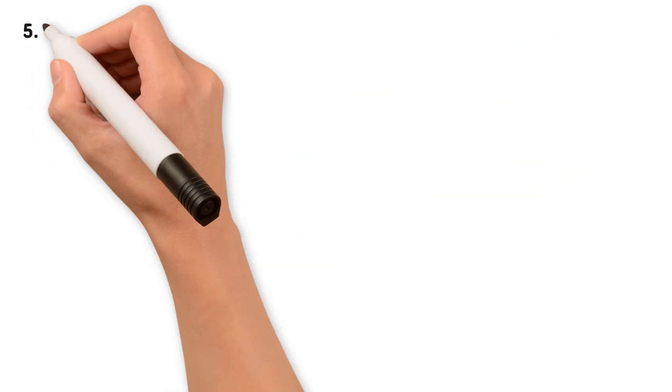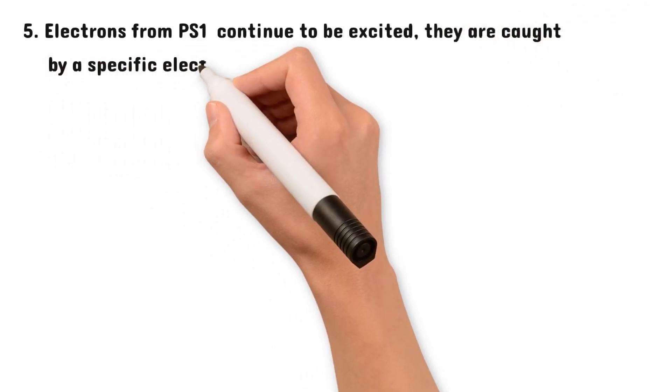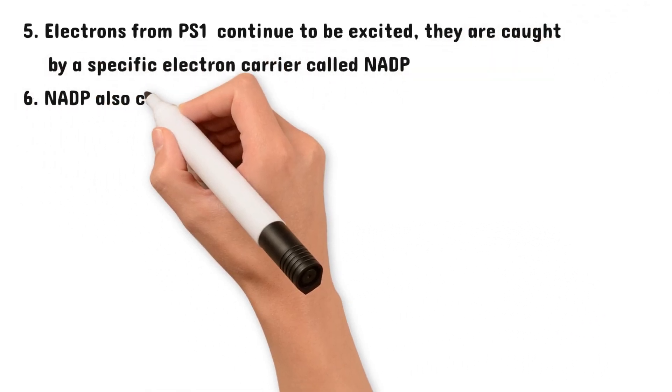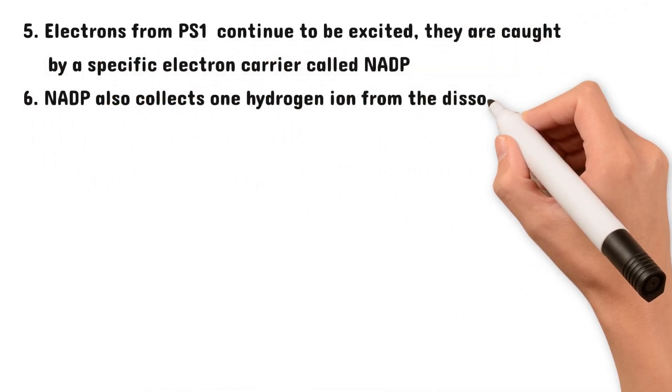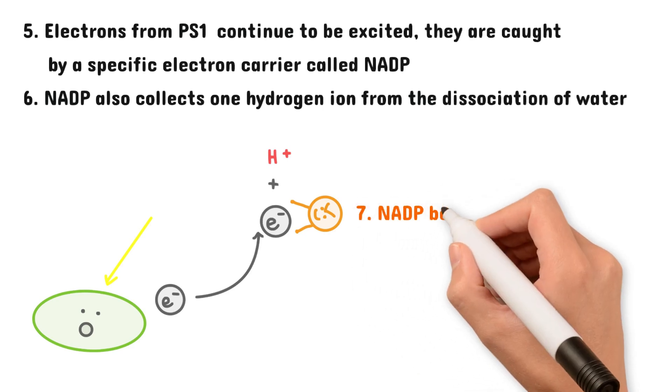Lastly, the electrons from photosystem I continue to be excited. This time, however, they're caught by a specific electron carrier, called NADP, which also collects one hydrogen ion from the disassociation of water. NADP uses the electron and the hydrogen ion to become NADPH.